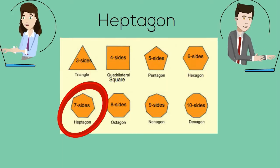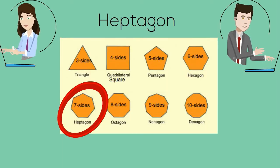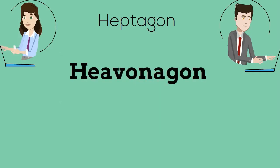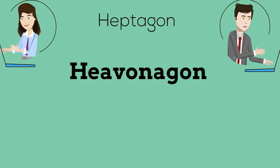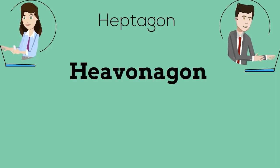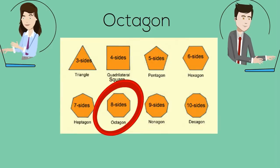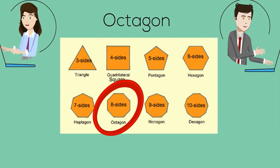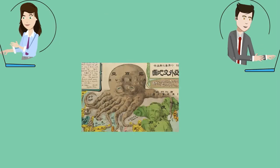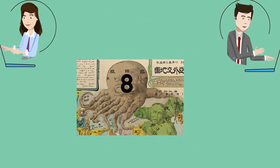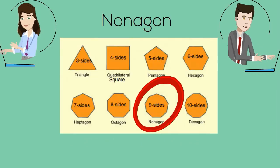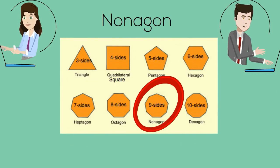A heptagon has seven sides. Hep kind of sounds like heaven, which rhymes with seven, so think of a heavenagon. An octagon has eight sides, so I think of an octopus with eight tentacles.